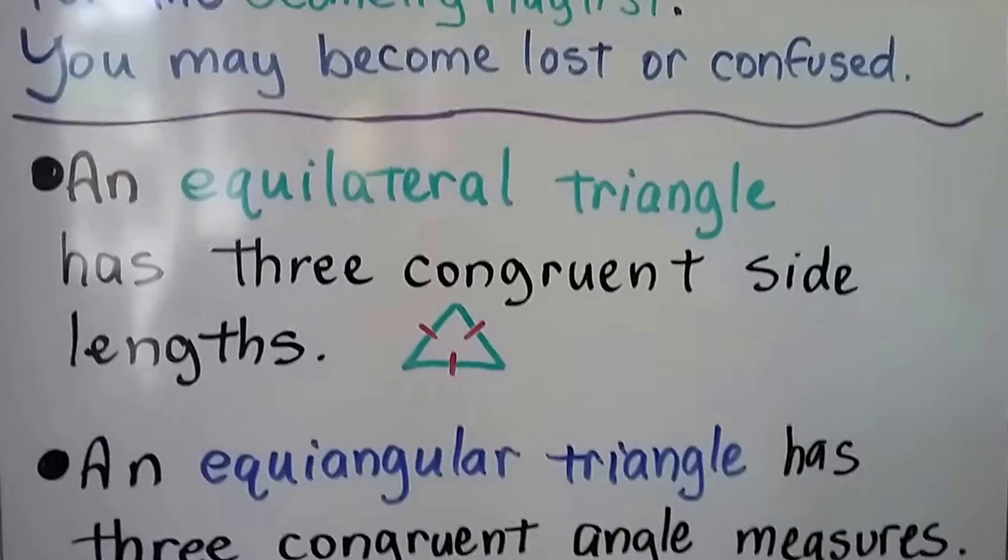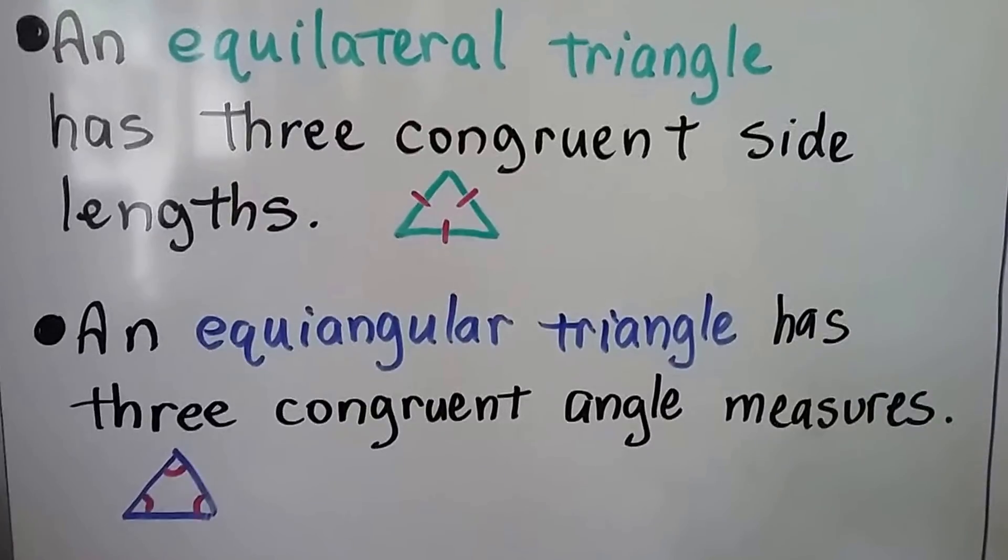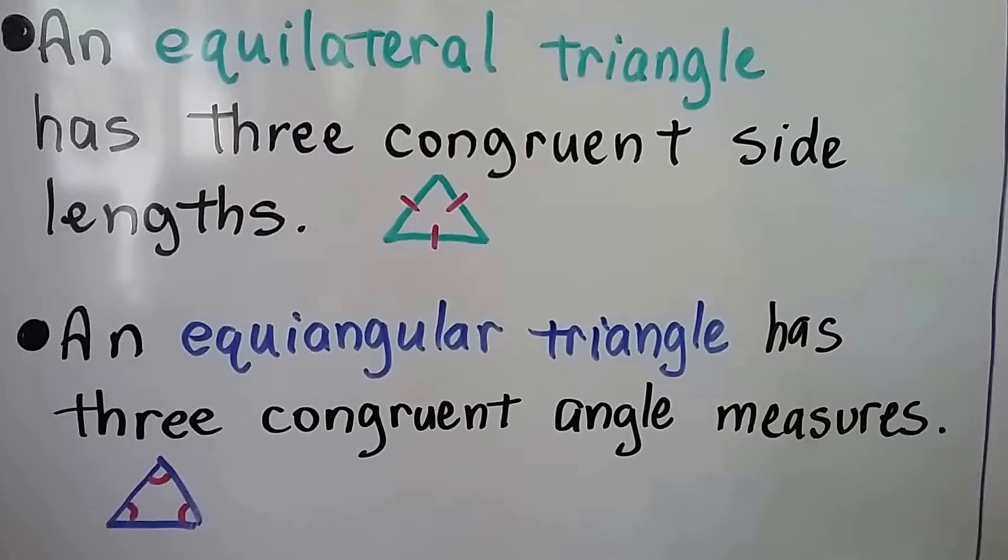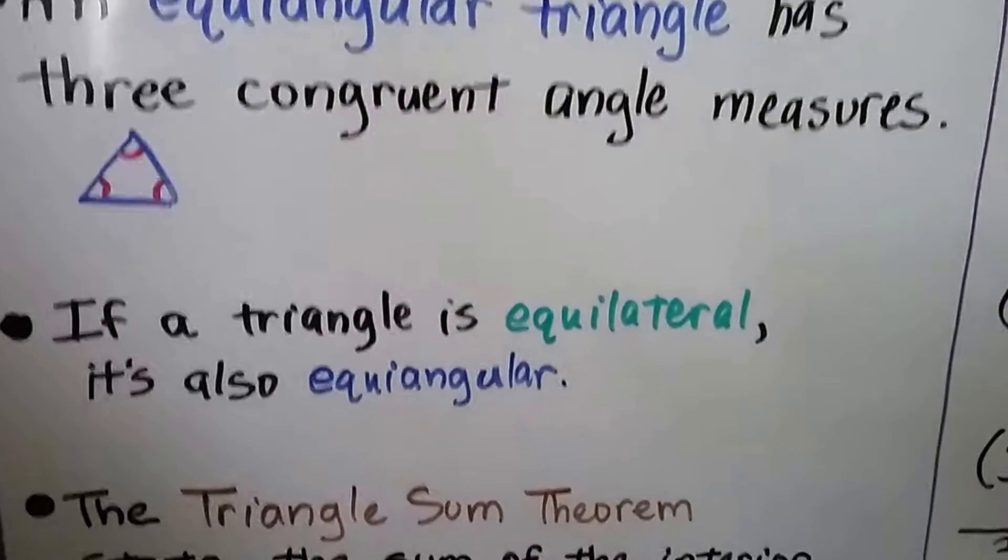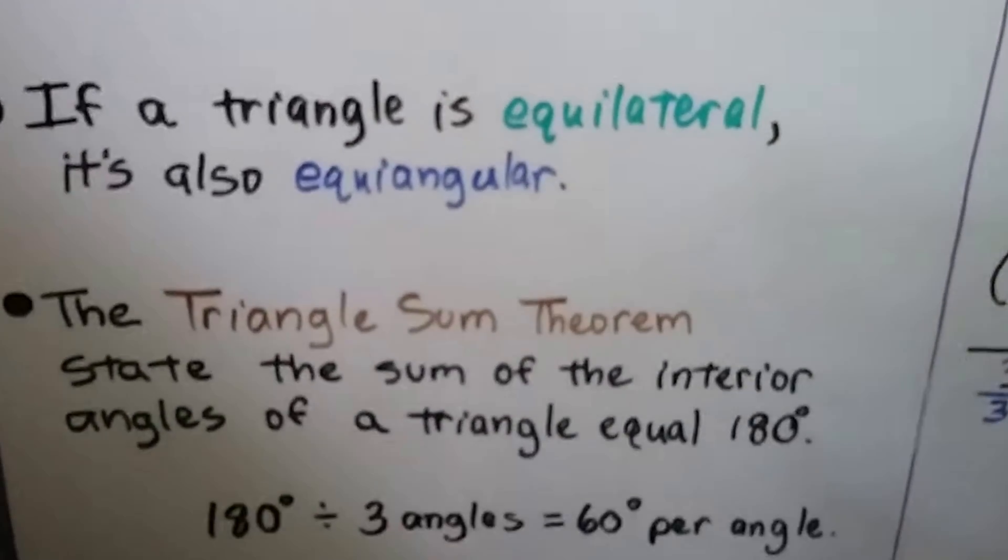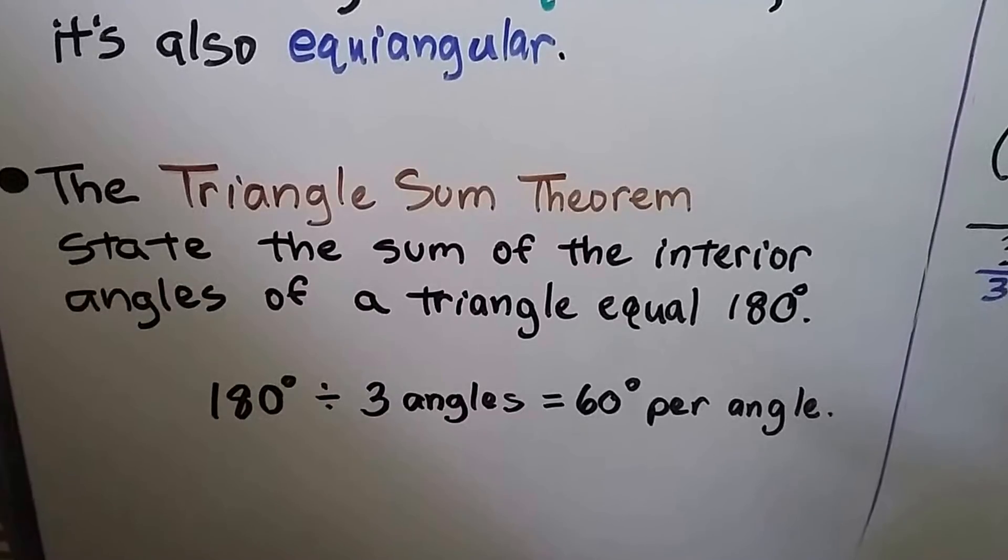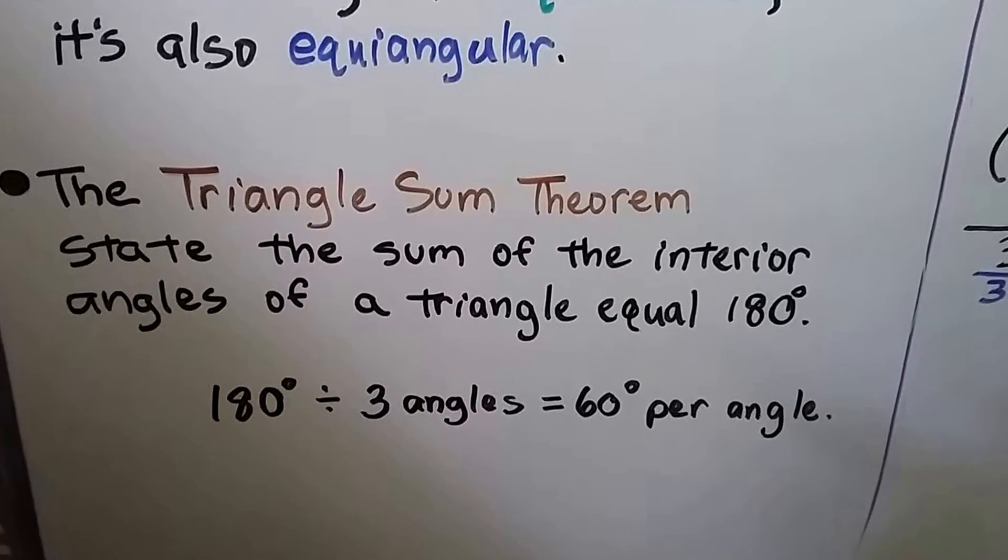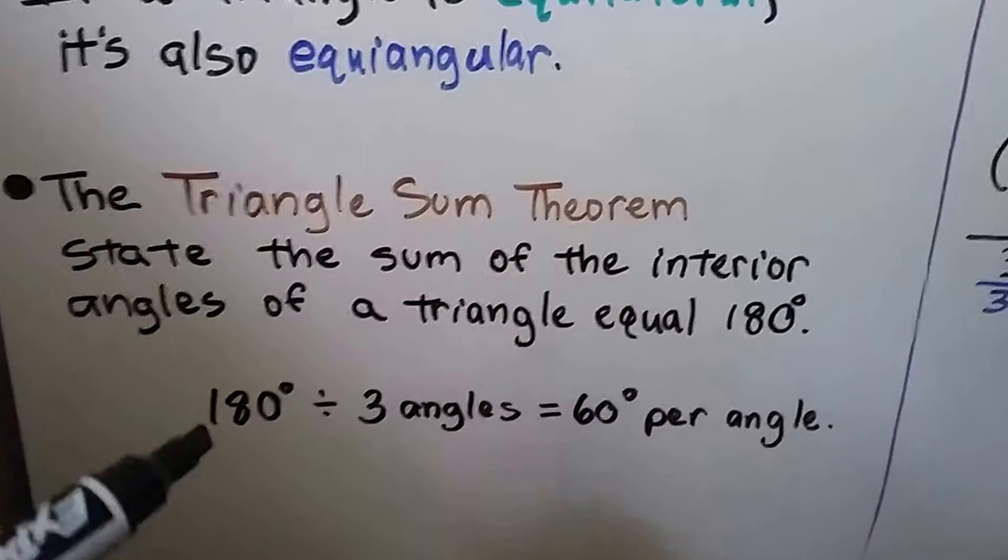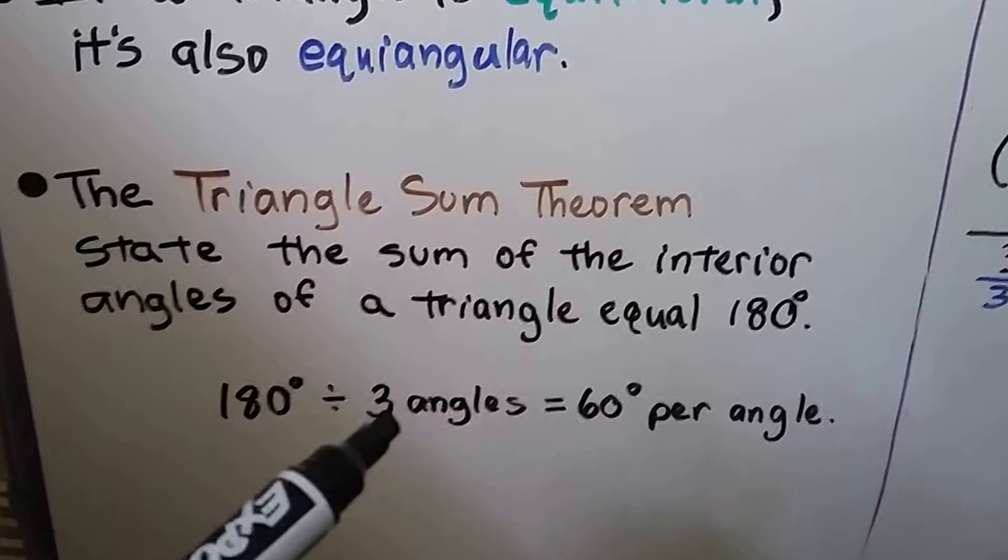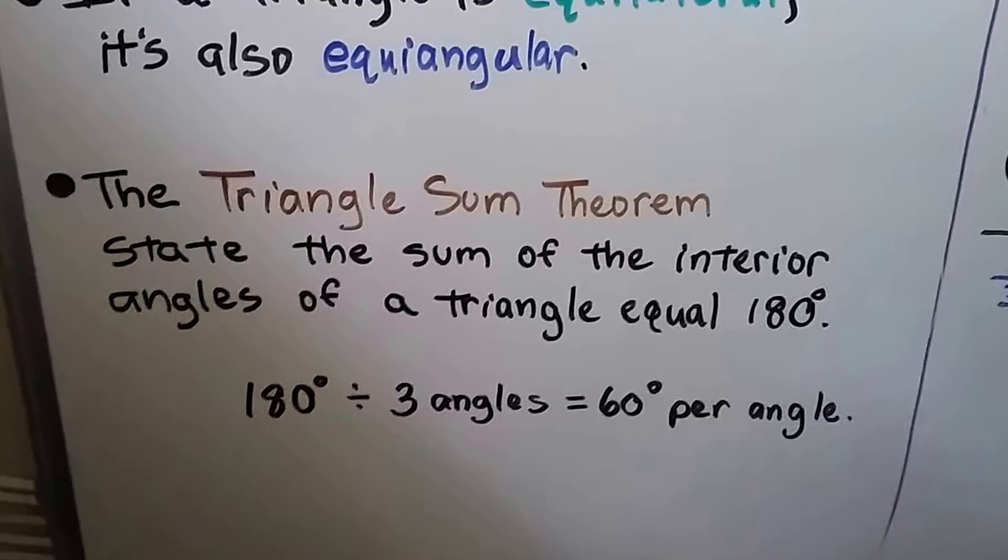An equilateral triangle has three congruent side lengths. An equiangular triangle has three congruent angle measures. If a triangle is equilateral, it's also equiangular. The triangle sum theorem states the sum of the interior angles of a triangle equal 180 degrees. Well, if it's equiangular, we could take that 180 degrees and divide it by the three angles and know that it's 60 degrees per angle.